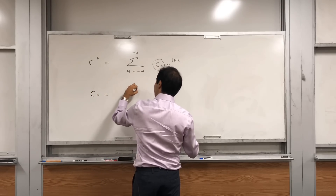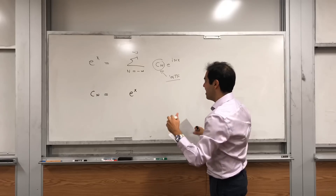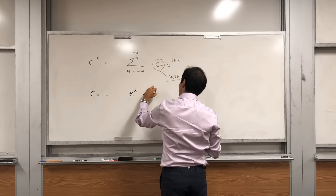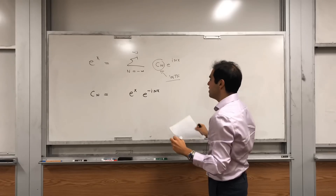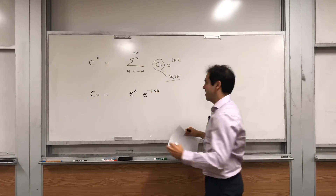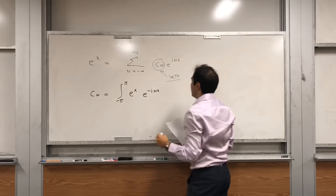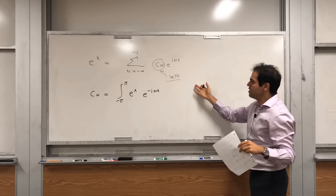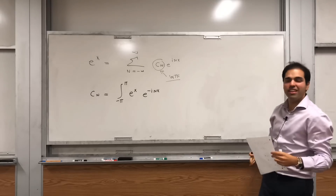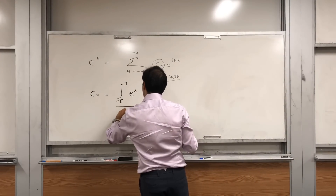What you do is take the function e to the x, multiply it by e to the minus inx — I'll explain the minus sign in a second — and integrate that from minus pi to pi, then divide by 2 pi.